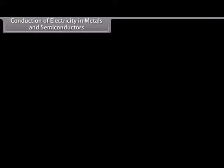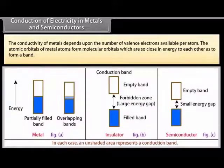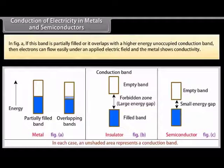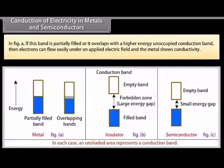Conduction of electricity in metals and semiconductors depends upon the number of valence electrons available per atom. The atomic orbitals of metal atoms form molecular orbitals which are so close in energy to each other as to form a band. In Figure A, if this band is partially filled or overlaps with a higher energy conduction band, electrons can flow easily under an applied electrical field and the metal shows conductivity.